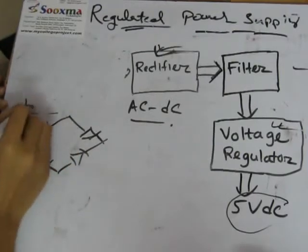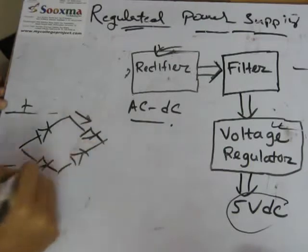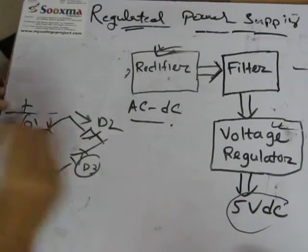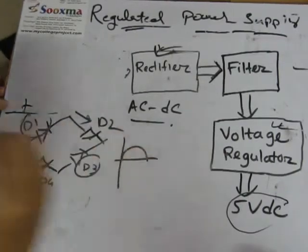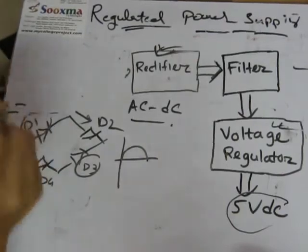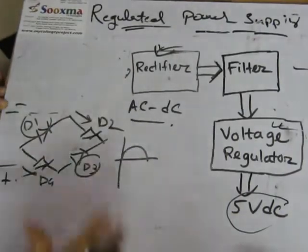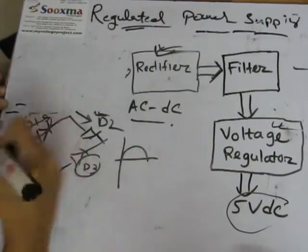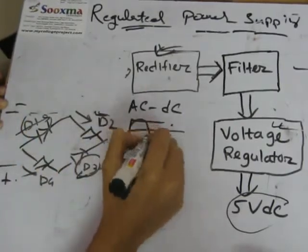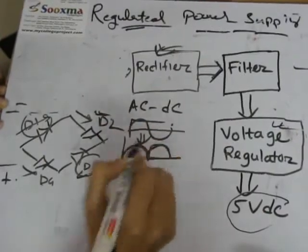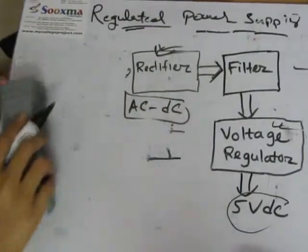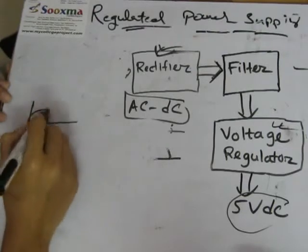For the positive half cycle, D2 and D4 will conduct, and the other two diodes will be in reverse bias condition, giving us a positive waveform. In the negative half cycle, D2 and D4 will be in reverse bias, and D1 and D3 will conduct, again producing a positive waveform. So though the input is sinusoidal, the output becomes unidirectional — we are getting DC — but it is a pulsating DC, not a perfect DC.